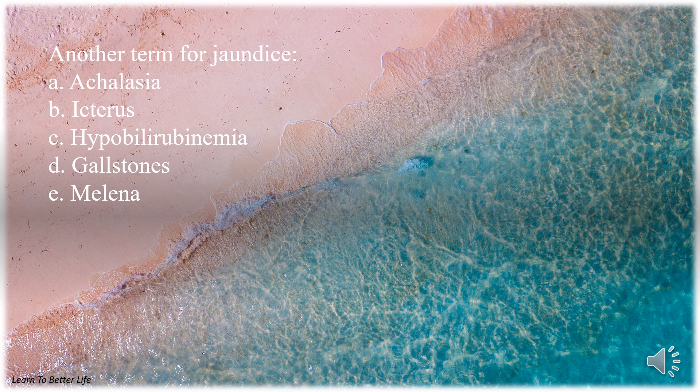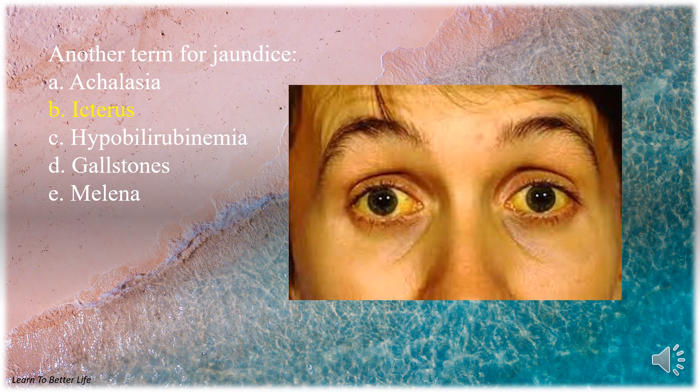Another term for jaundice. A. Achalasia. B. Icterus. C. Hypobilirubinemia. D. Gallstones. E. Melena. The answer is B. Icterus.